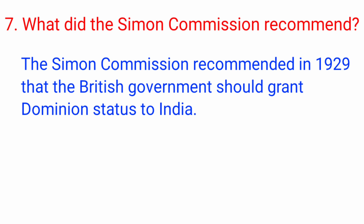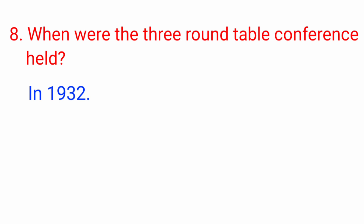Question number 7: What did the Simon Commission recommend? Answer: the Simon Commission recommended in 1929 that the British government should grant dominion status to India. Question number 8: When was the third round table conference held? Answer: in 1932.